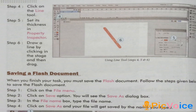Saving a Flash document: When you finish your task, you must save the Flash document. Follow these steps. Step 1, click on the File menu. Step 2, click on Save option — you will see the Save As dialog box. Step 3, in the File Name box, type the file name. Step 4, click on Save As and your file will get saved by the name you typed.